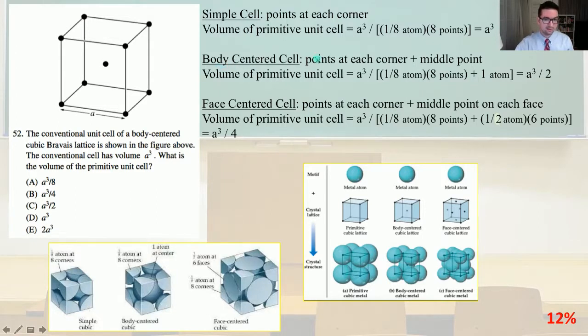We also have the body centered cell with points at each corner plus a middle point. The volume of the primitive unit cell in this case would be a³ over (1/8 atom times 8 points plus 1 atom in the middle), and so that equals a³ over 2. The problem asked for the body centered cubic Bravais lattice, and so that equals a³ over 2. That is answer C.